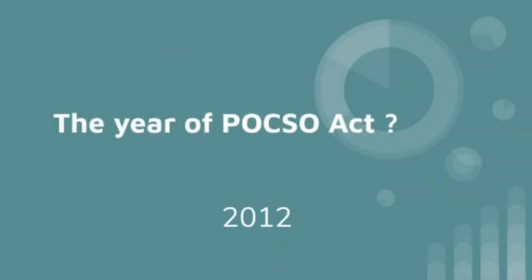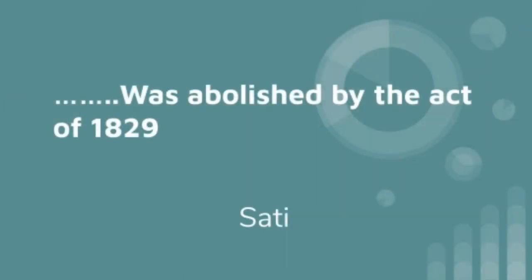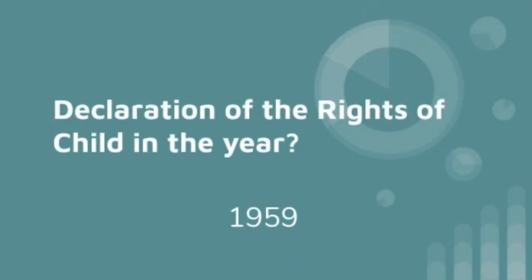The Bill Against Sexual Harassment was enacted in the year 2012, and the famous POCSO Act was launched. The system of Sati was abolished by the Act of 1829. The Declaration of the Rights of the Child was in the year 1959.